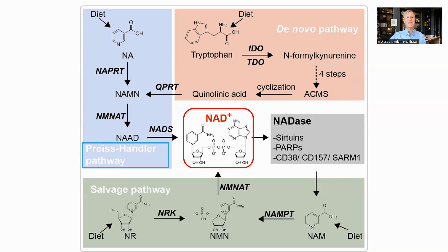The Preiss-Handler pathway starts with nicotinic acid, then goes through a couple of steps to make NAD. Although there is no known enzyme which demethylates trigonelline to form nicotinic acid, work by Dr. Sorrentino showed that this was also the pathway taken by trigonelline when building up NAD.